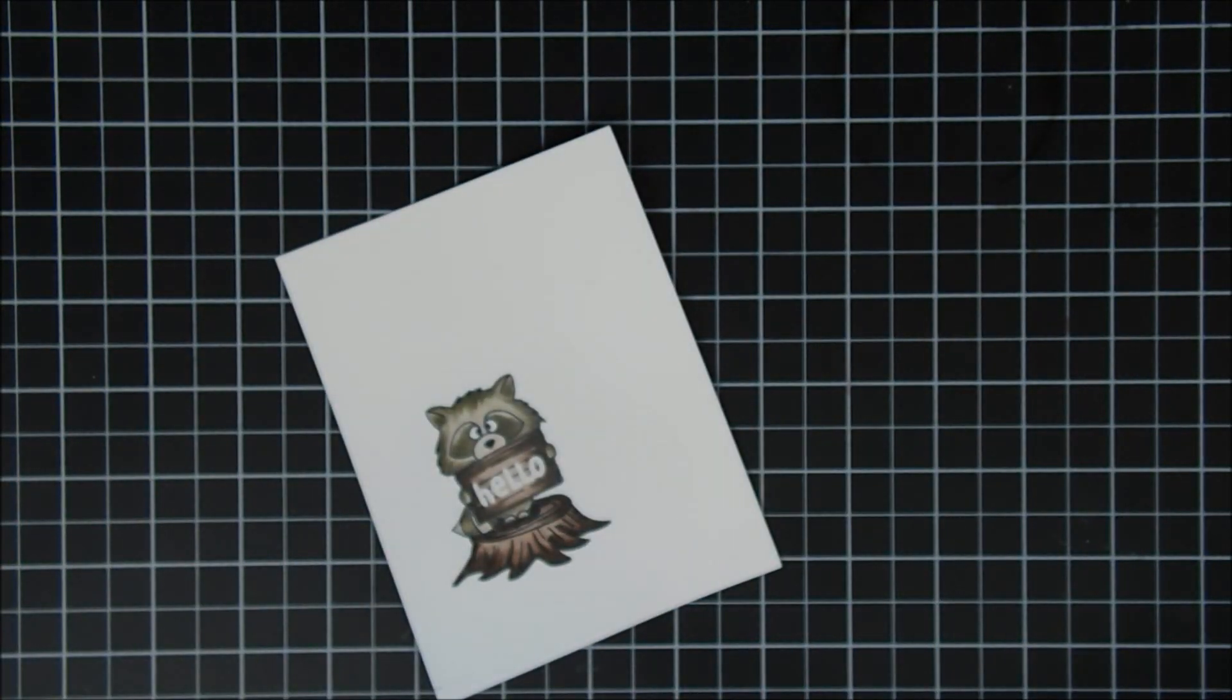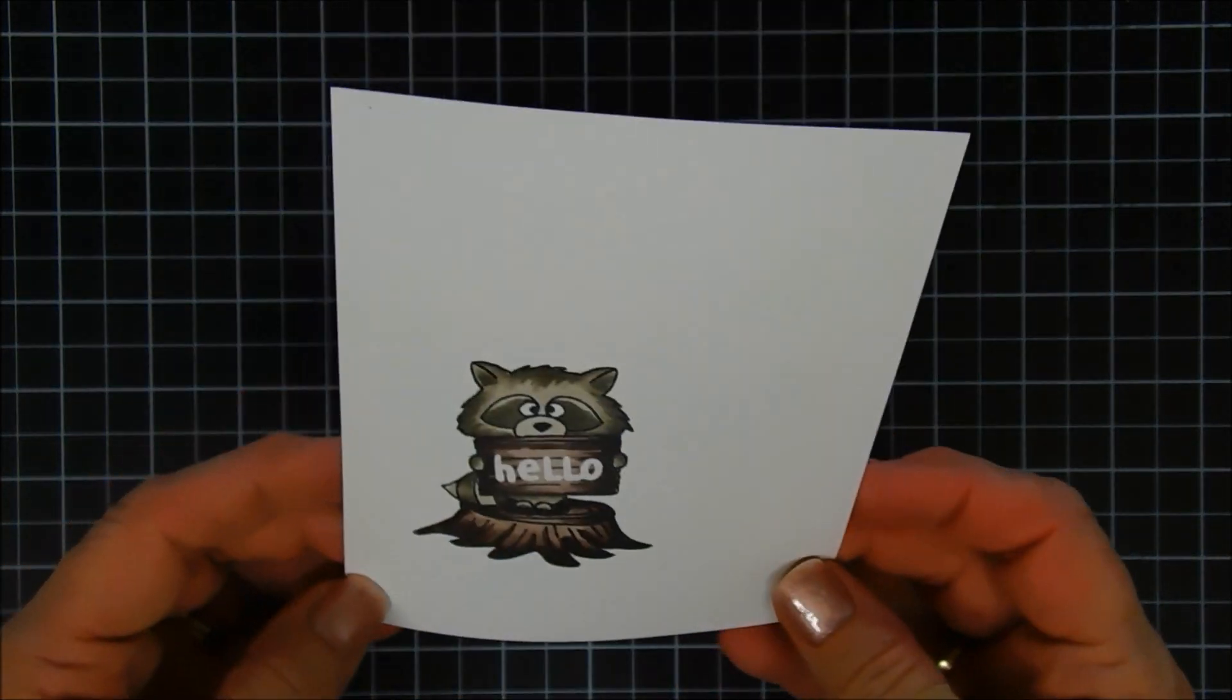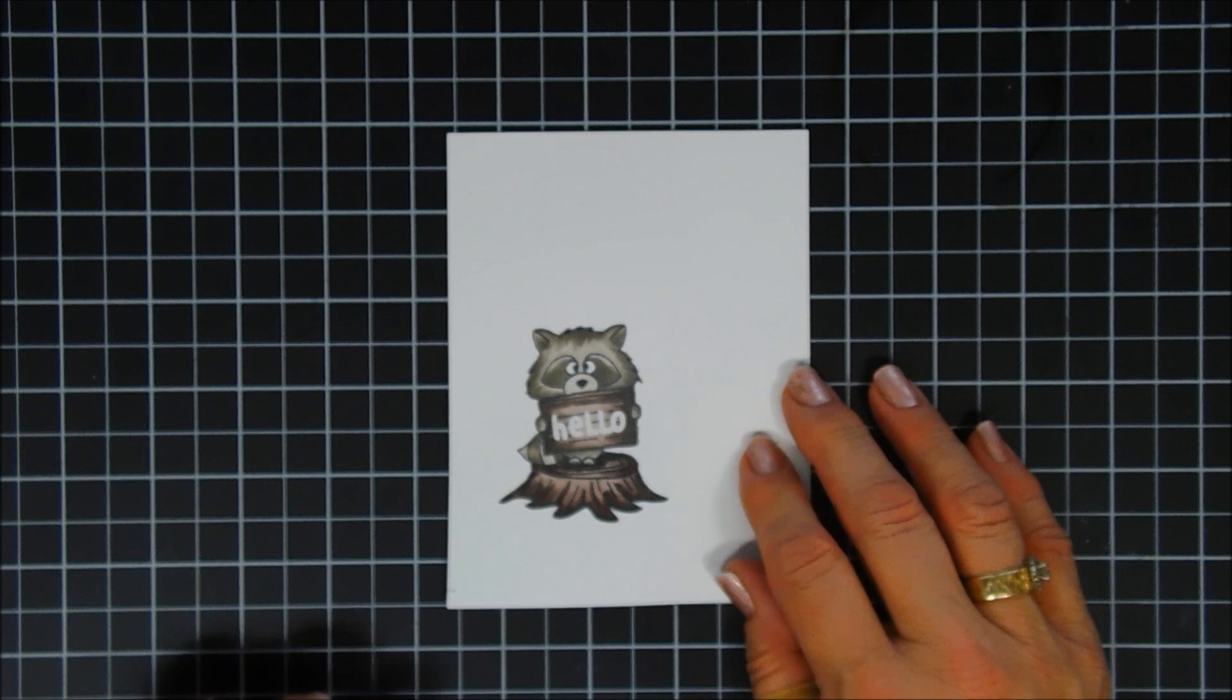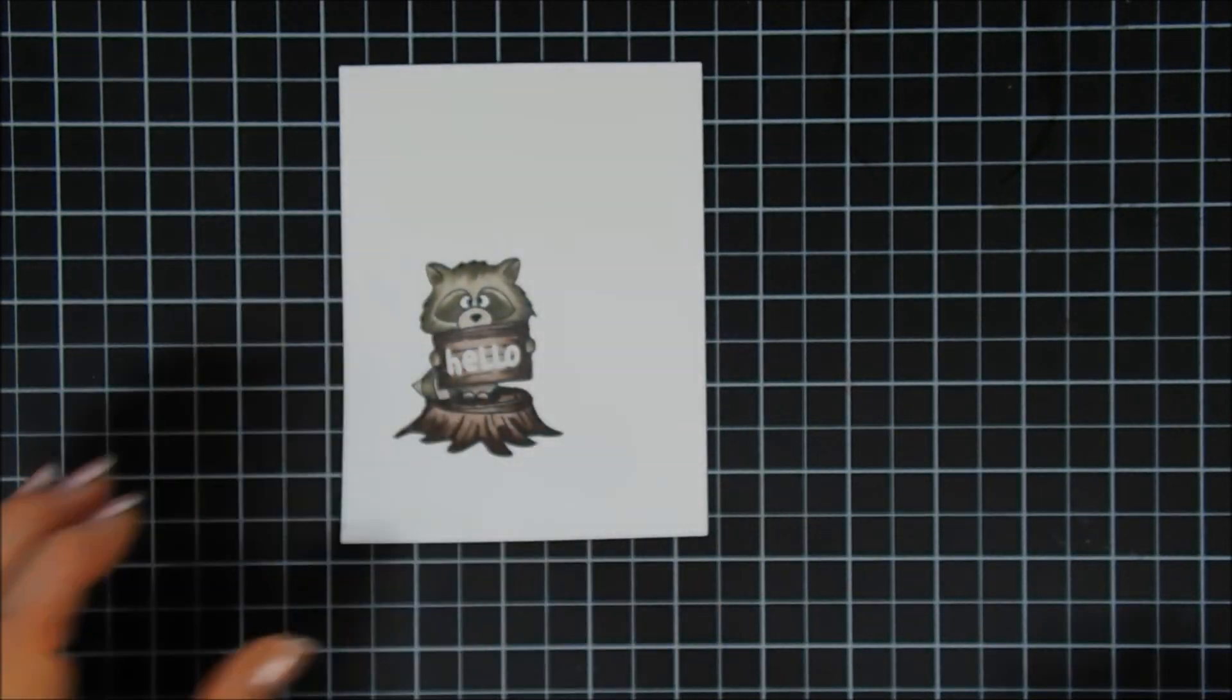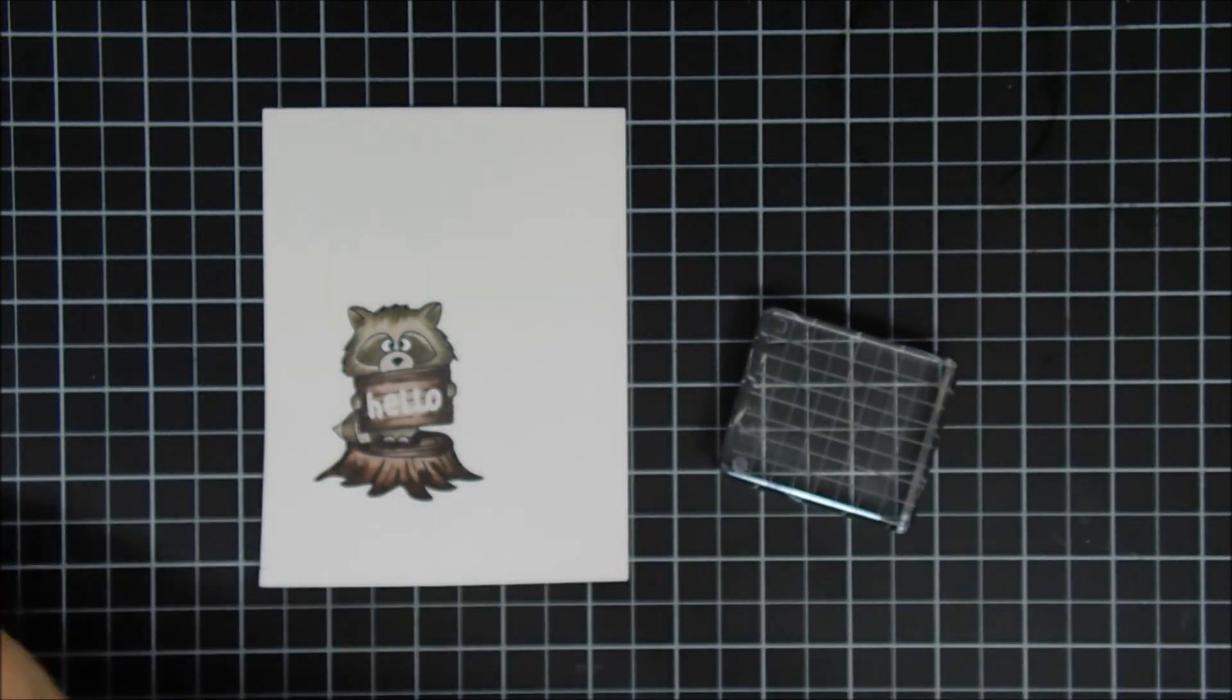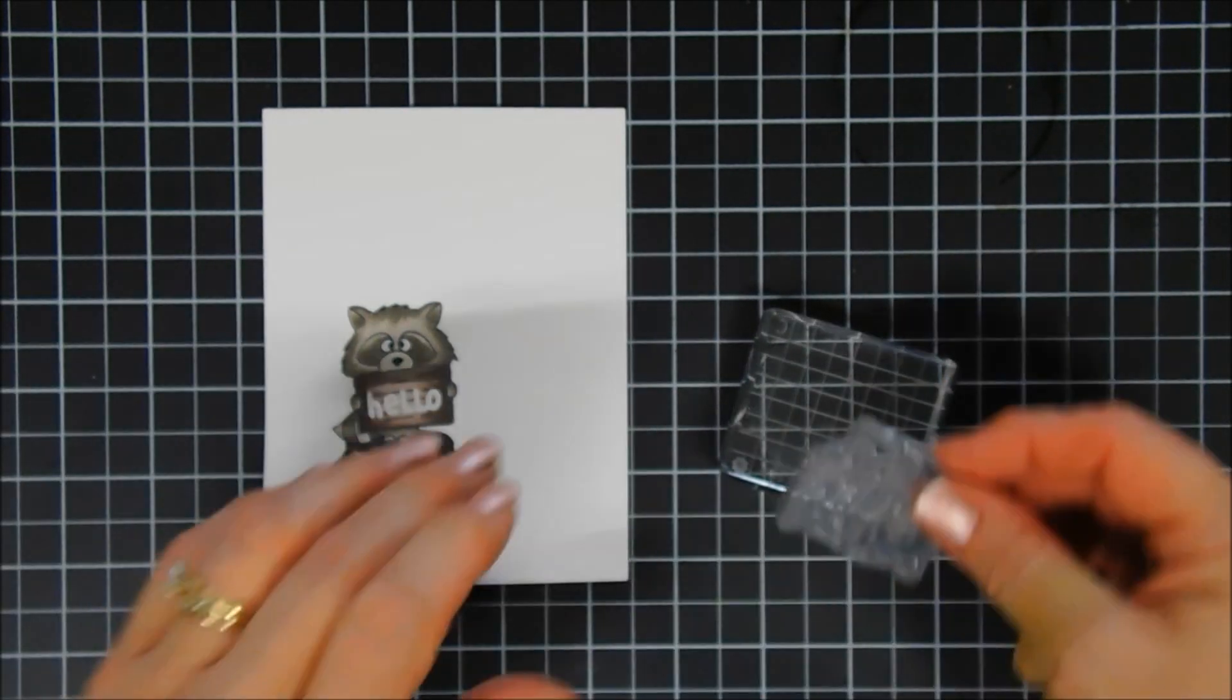Now after I got this done, I thought, you know what, we could add a little bit extra. I like dimension on my cards. I like frames and dimension, and so we're going to do both of those today. So I thought we'd do a little bit more stamping. We're going to stamp the same raccoon on our panel here.